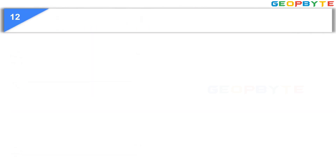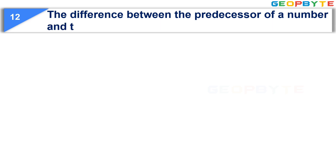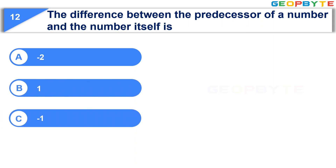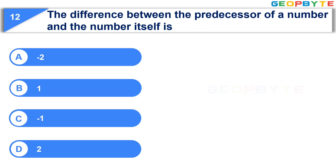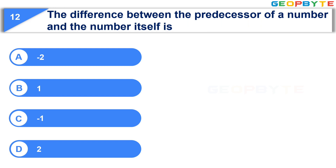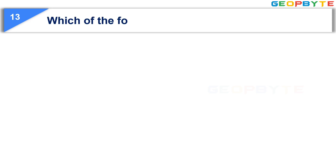Now let us see the next question: The difference between the predecessor of a number and the number itself is. Option D: 2. Your time starts now. Your time is up and the correct answer is Option C, minus 1.